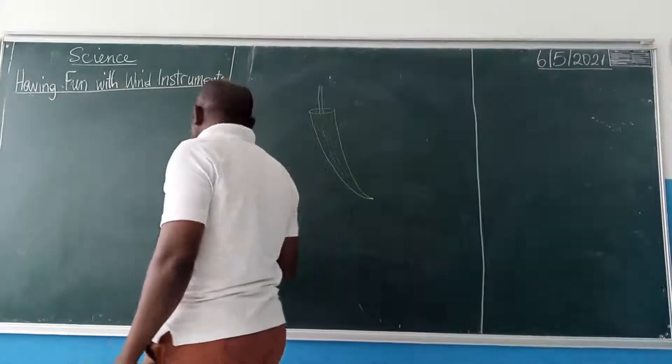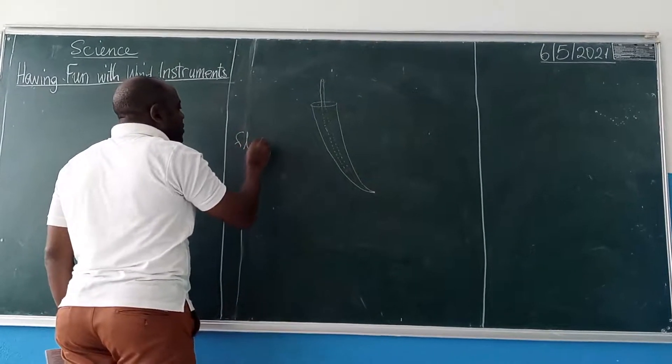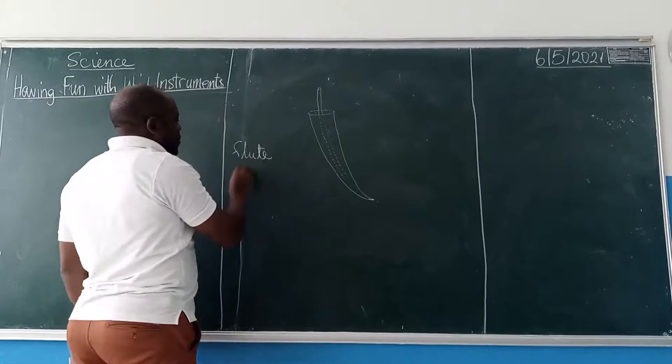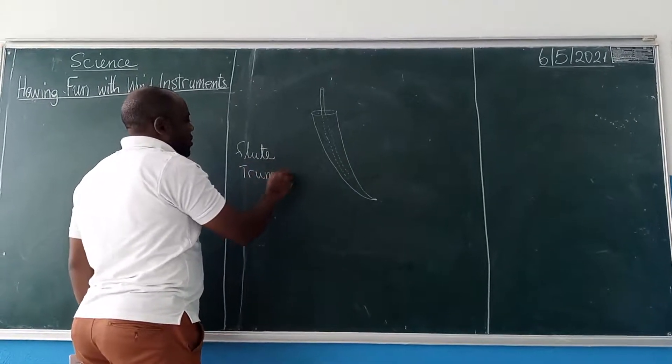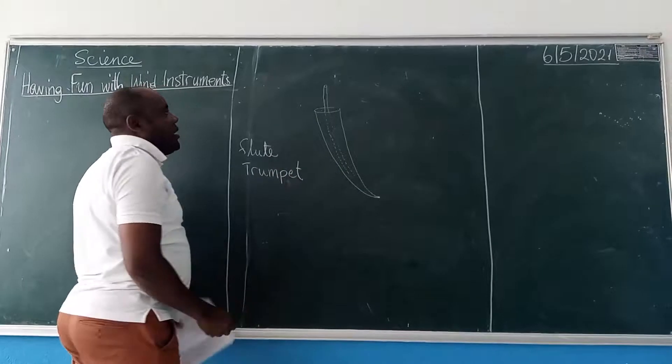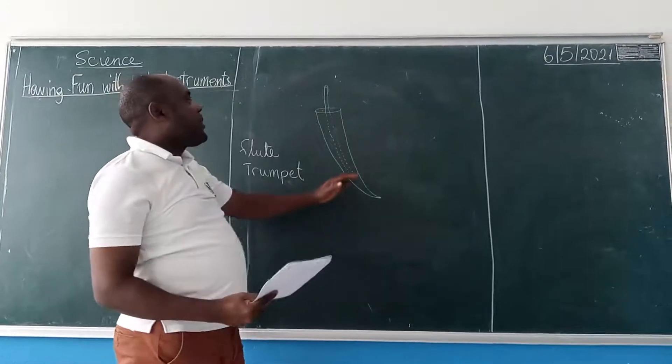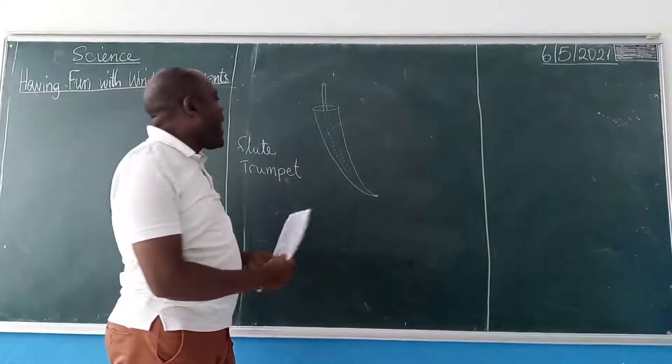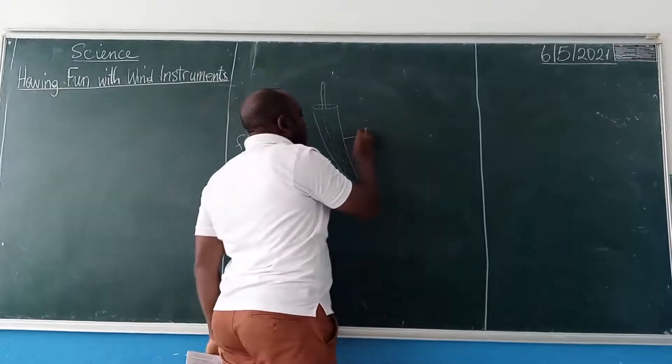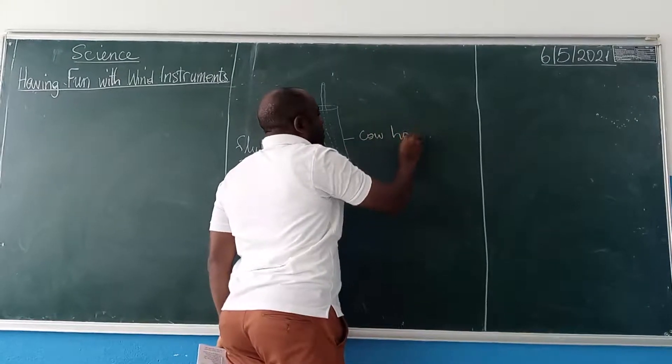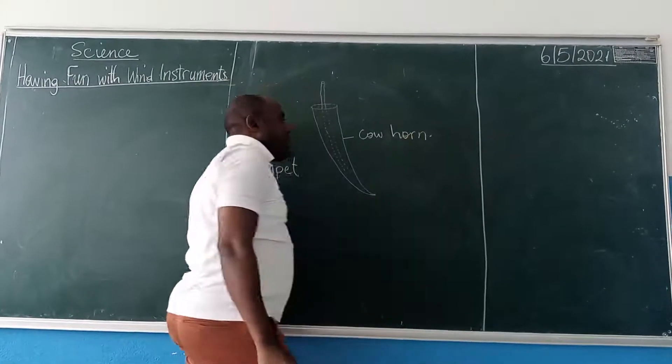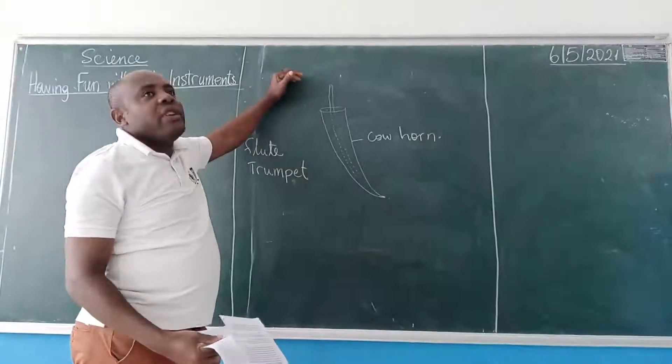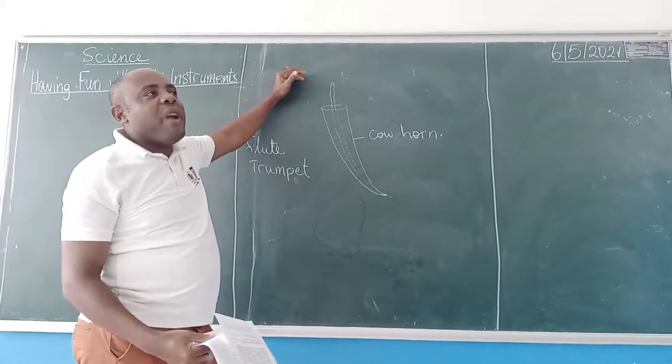Again, a flute, a flute, trumpet. Now I drew this one, is a traditional instrument. This is a horn of a cow, a cow horn. It is an instrument that they use in traditional dances in my village.